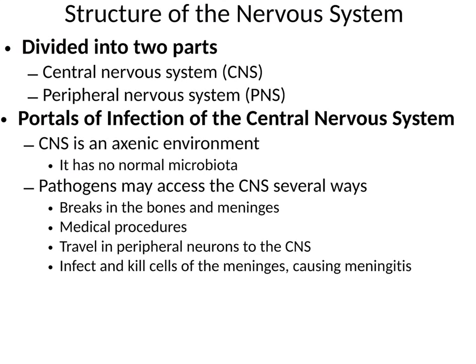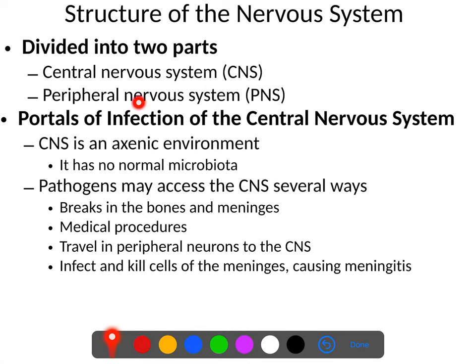Let's talk about the nervous system and diseases of the nervous system. The nervous system is divided anatomically into two parts: the central nervous system and the peripheral nervous system. The central nervous system consists of the brain and spinal cord. Generally speaking, the nervous system does not have any natural microbes, and the CNS is probably the most protected part of your body and should not have any microbes in it.